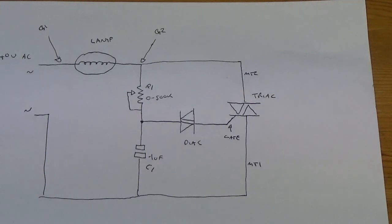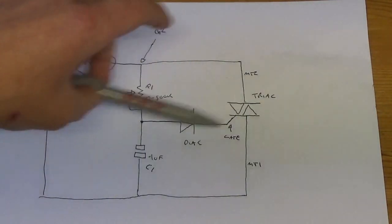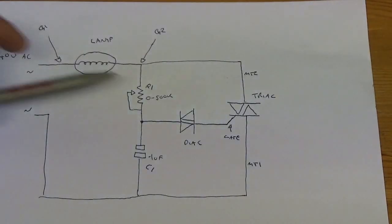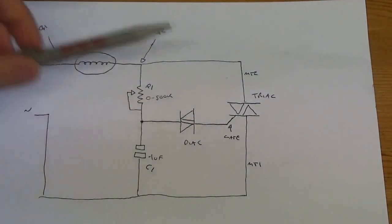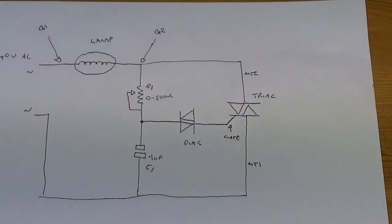Diacs have a threshold voltage when they actually snap on, when they start conducting, and it's usually around 30 volts. It conducts in both positive and negative and won't conduct when it's zero volts. It snaps on quickly when it reaches the breakdown voltage.